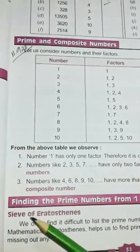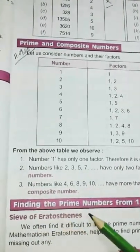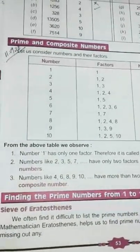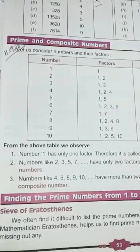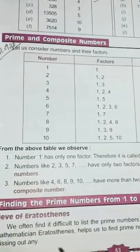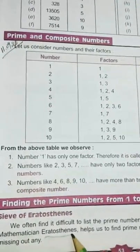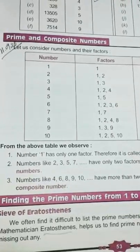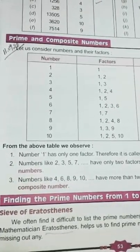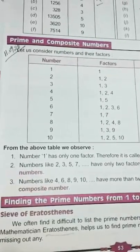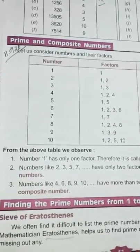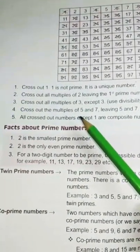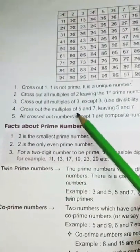Then comes to finding the prime numbers from 1 to 100. This method invented by a Greek mathematician, Eratosthenes, helps us to find prime numbers from 1 to 100 easily, without missing out any. Let's see. Here, some points are given. We have to follow.